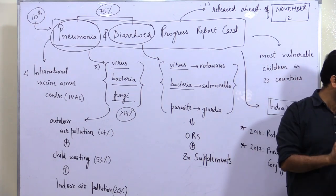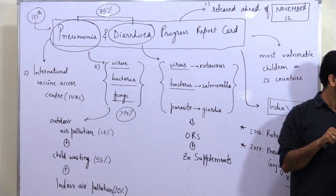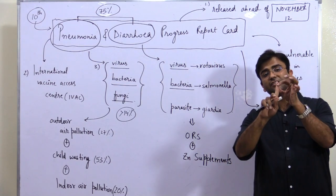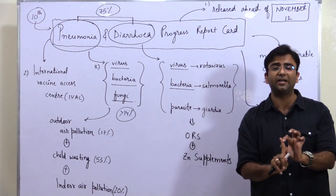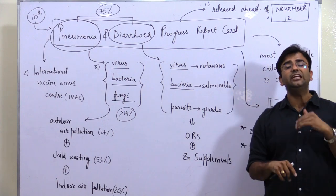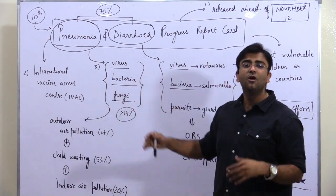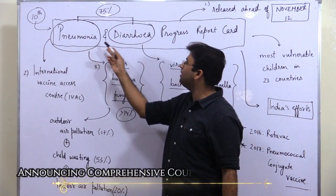These six interventions are necessary according to this report for fighting the problem of pneumonia and diarrhea.